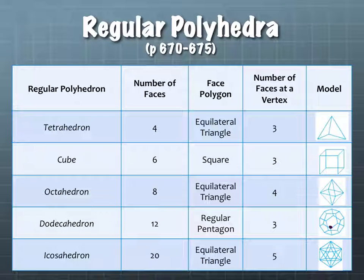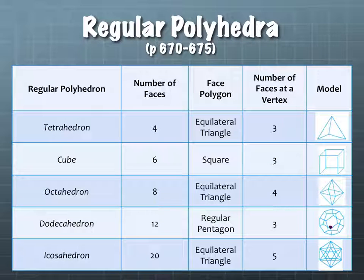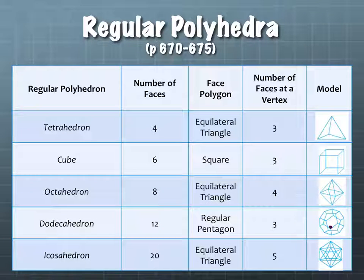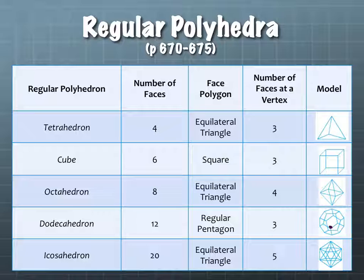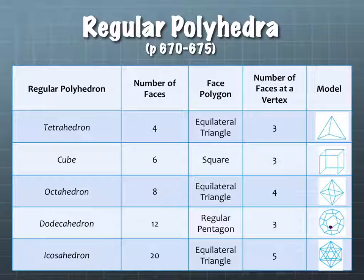When would you call it a tetrahedron and when would you call it a triangular pyramid? Well, a prism has two parallel bases on the top and bottom, and a tetrahedron doesn't. You could call it a triangular pyramid — that would be appropriate, another name for it. But tetrahedron is a little more precise, because the faces are equilateral, whereas in a triangular pyramid they wouldn't necessarily have to be equilateral.